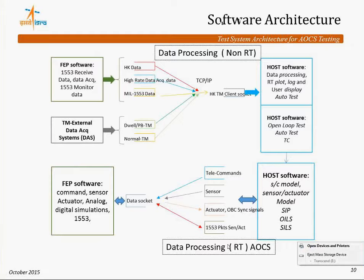The software architecture has a lot of data to process with real-time requirements, running at very high real-time rates for unit-level testing. The software handles 1553 on one side, and command/sensor/actuator systems on the other, plus the data acquisition system. Software is divided into two aspects: real-time, where sensors and actuator data must be updated for AOCS functions, and non-real-time, where housekeeping monitoring data is acquired in long-duration stream-based acquisition and left for post-processing. This is how the architecture is defined.